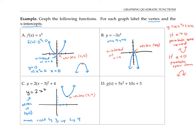Notice how easy it is to just read off the vertex when our quadratic function is written in vertex form. In general, any quadratic function written in the form a(x − h)² + k has a vertex at (h, k), because we're moving the parabola from the origin to the right by h and up by k. That's why this form is called the vertex form. Notice that this parabola has no x-intercepts, because it does not cross the x-axis.